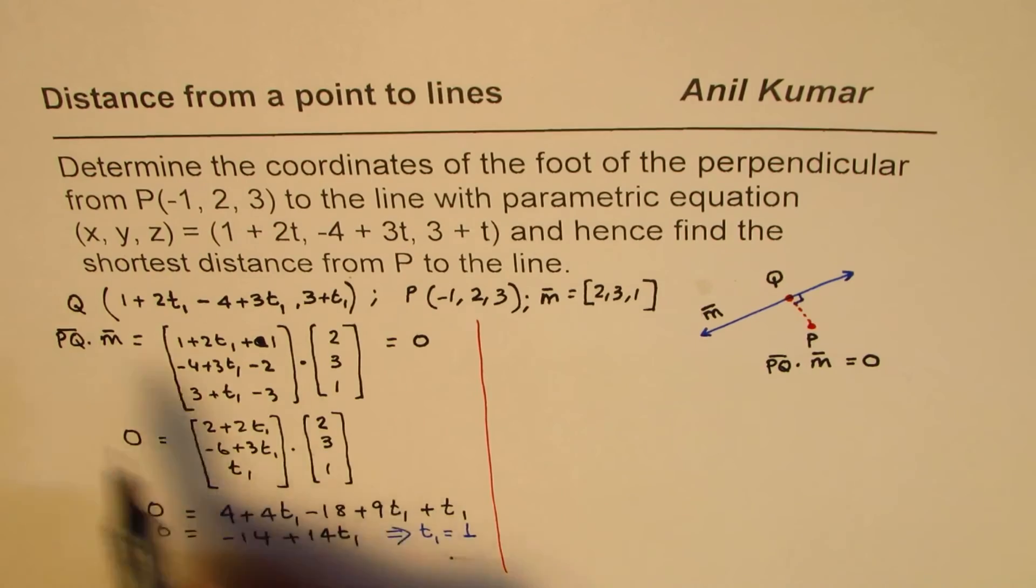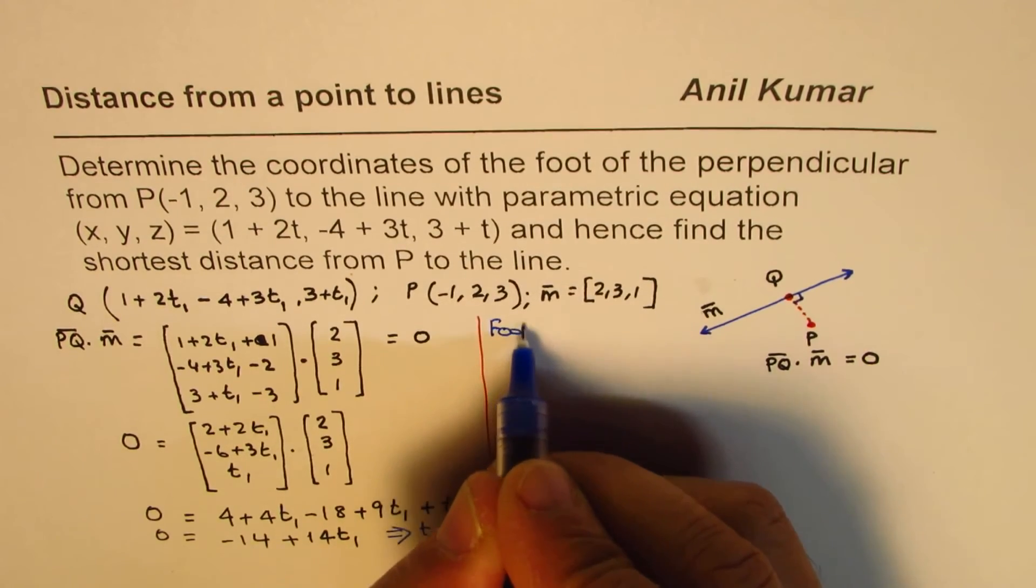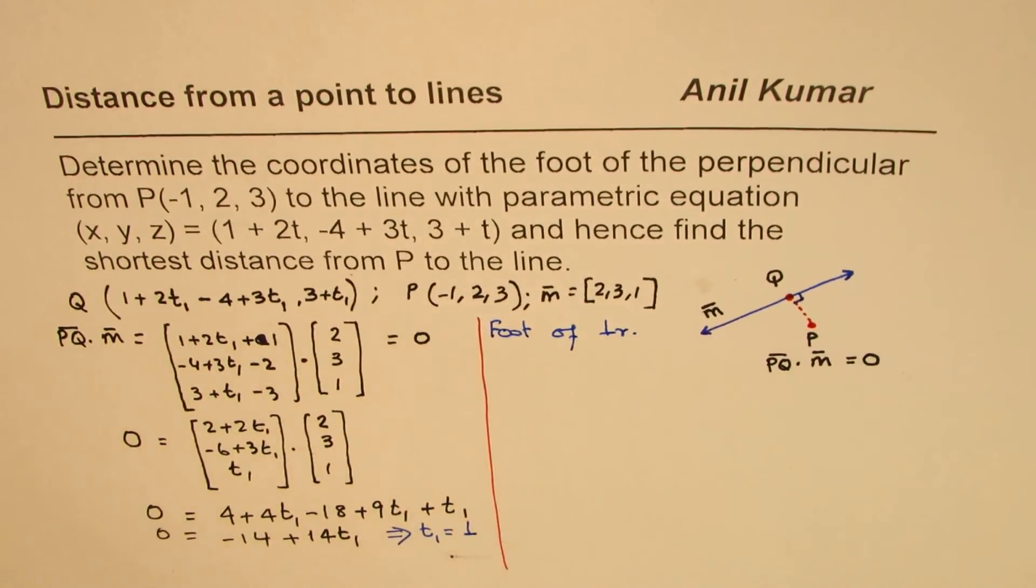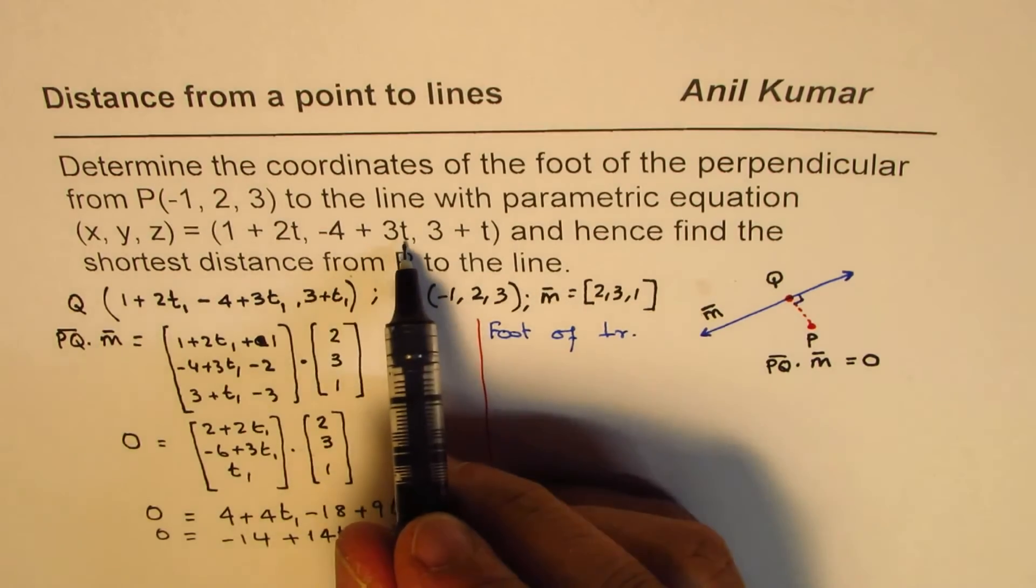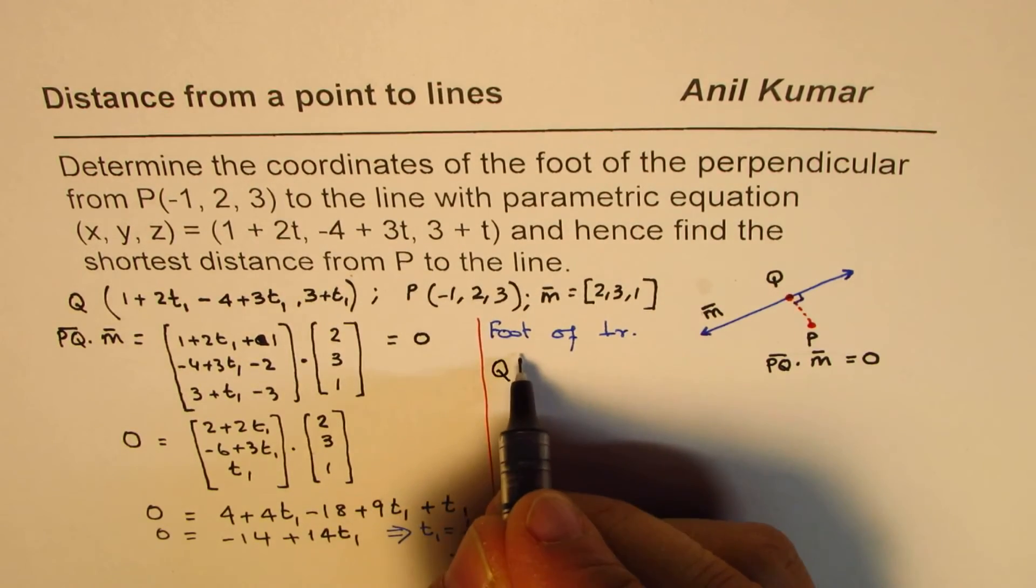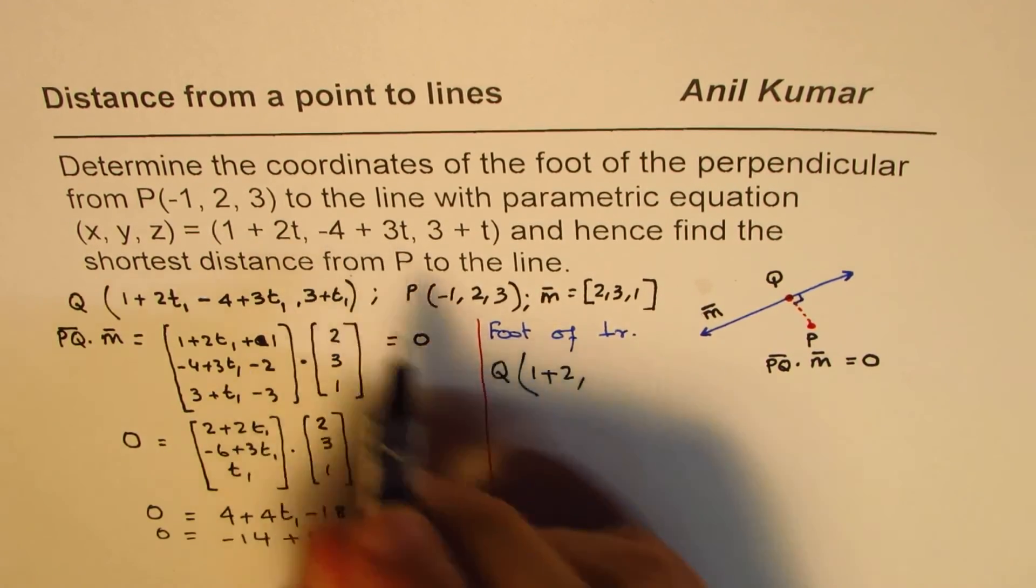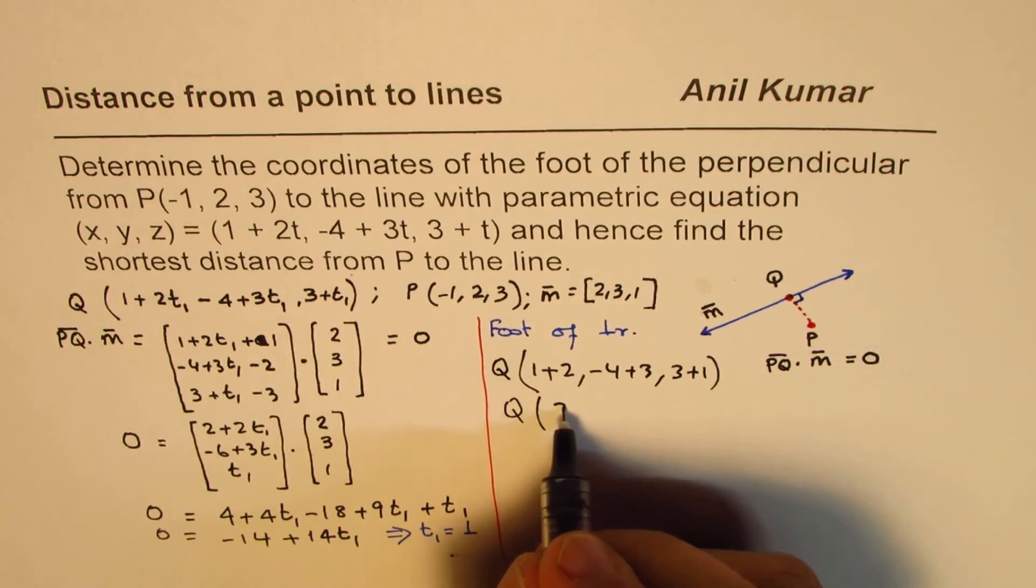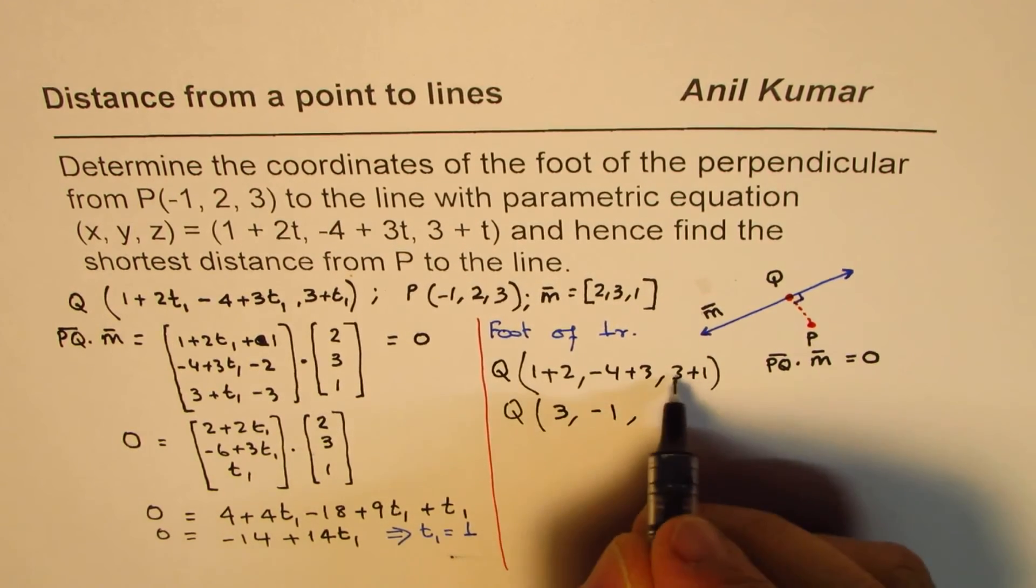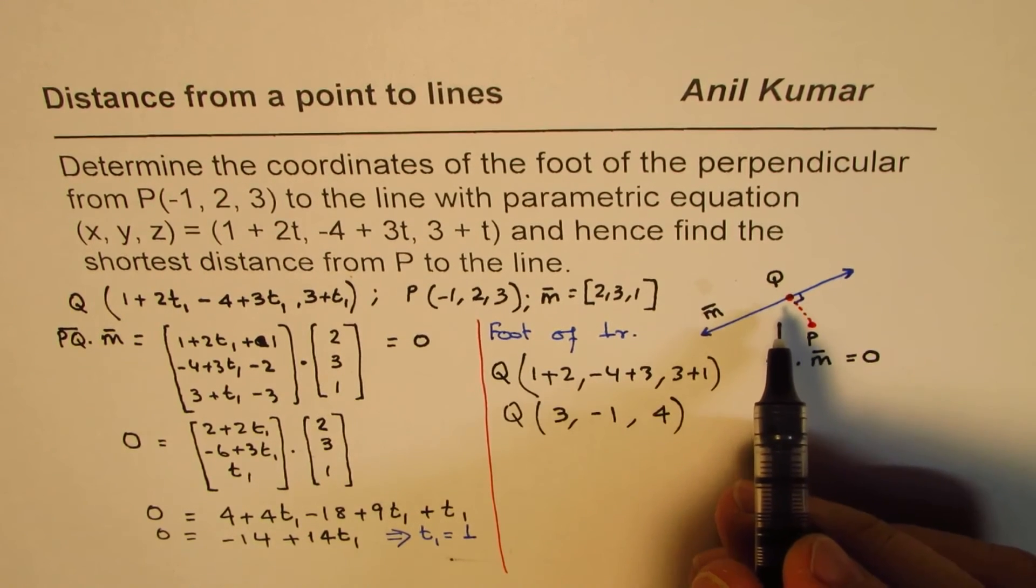Now, we know what point Q is. That is the foot of perpendicular. Q is the foot of the perpendicular. So we will write foot of perpendicular is, in this parametric equation, I will substitute t1 as 1. So the point Q for us is (1 + 2, -4 + 3, 3 + 1). So that is to say point Q is (3, -1, 4). So we have found the foot of the perpendicular. That is part a.